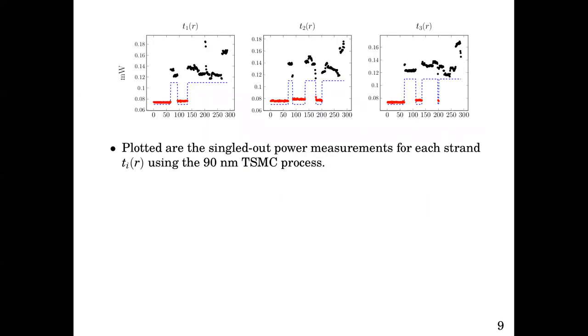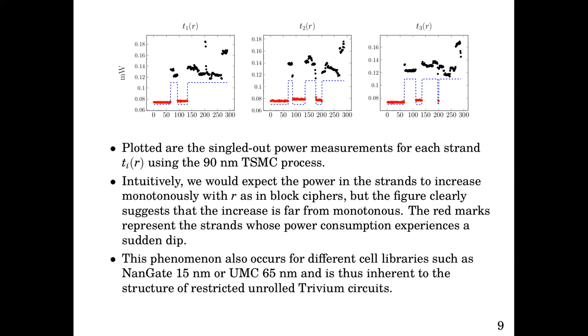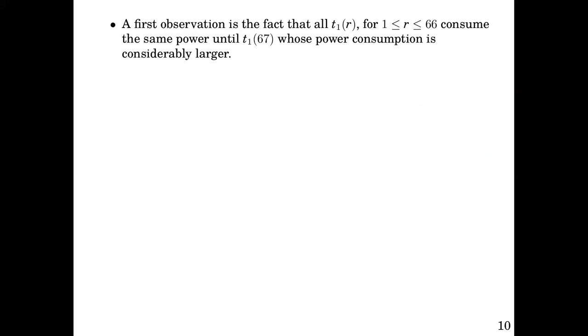Plotted are the singled out power measurements for each strand TI of r using the TSMC 90 nanometer cell library. Intuitively, we would expect the power in the strands to increase monotonously with r as in block ciphers, but the figure clearly suggests that the increase is far from monotonous. The red data points represent the strands whose power consumption experiences a sudden dip. This phenomenon also occurs for different cell libraries, such as non-gate 15 nanometer or UMC 65 nanometer, and is thus inherent to the structure of the restricted unrolled trivium circuit.